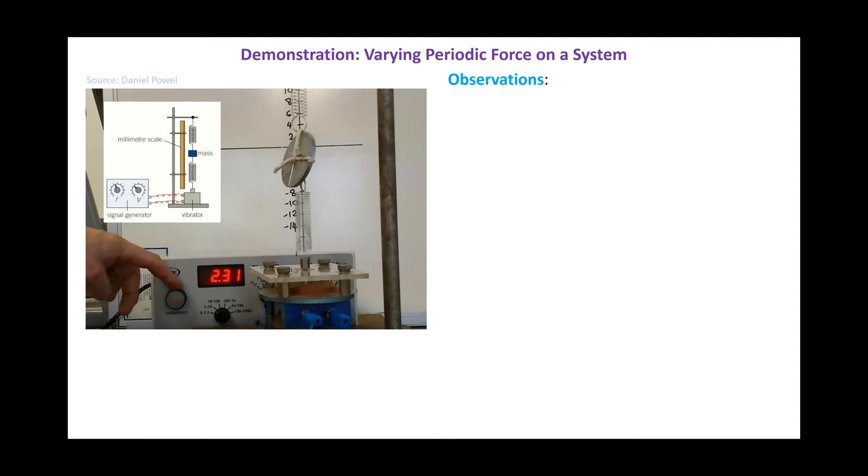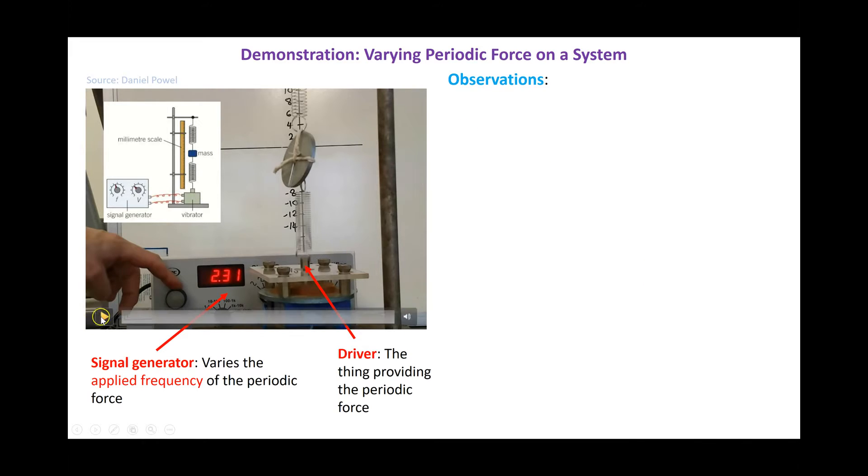A classic example of this is a mass suspended between two springs. Here, a signal generator allows us to vary the applied frequency of the periodic force. That signal generator tells the driver, the thing providing the periodic force, at what frequency to oscillate. Now, we're going to make some observations of what happens as I increase the frequency of this oscillating system.